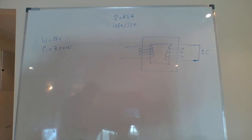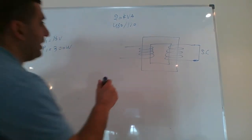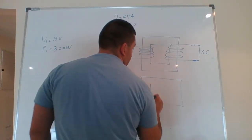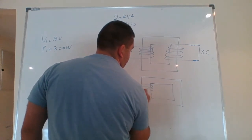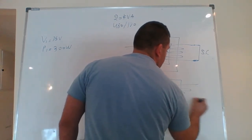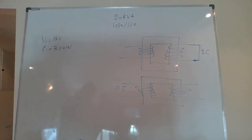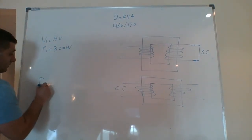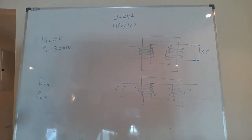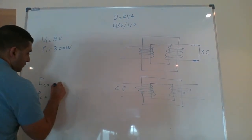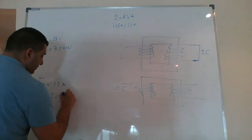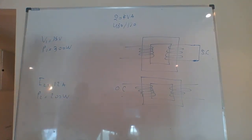During an open circuit test, where rated voltage is applied to winding two with winding one open, the following readings are obtained: I2 equals 12 amps and P2 equals 200 watts.